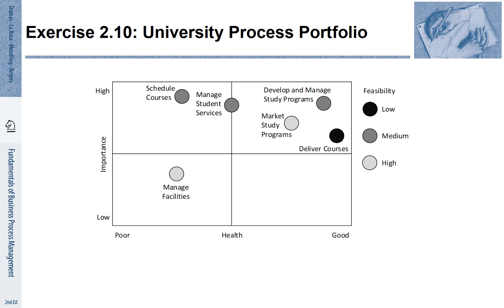The bottom axis shows its health, and the different colors indicate the feasibility of a potential improvement initiative. We observe that 'schedule courses' is on the left-hand side at the top of this process portfolio. This means it is the process where the combination of importance and health is best. We observe that the feasibility of improving that process is medium. For this reason, we pick this process because it is on the left-hand side top of this figure.